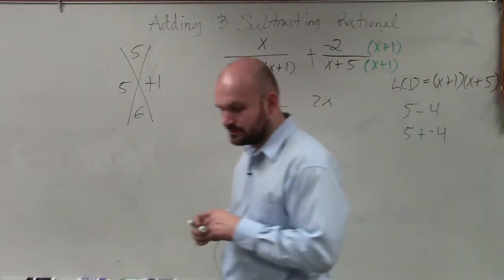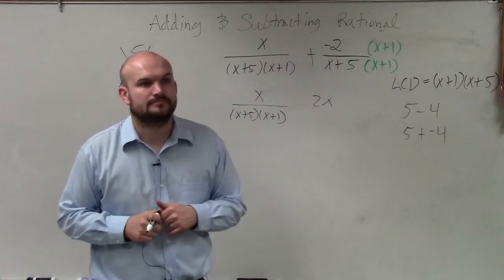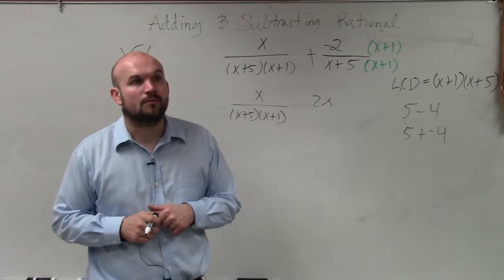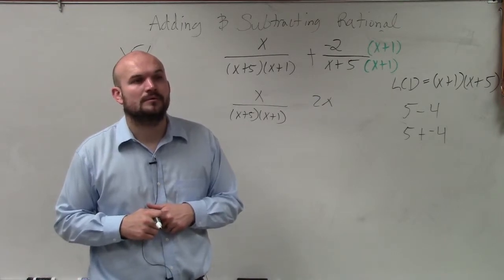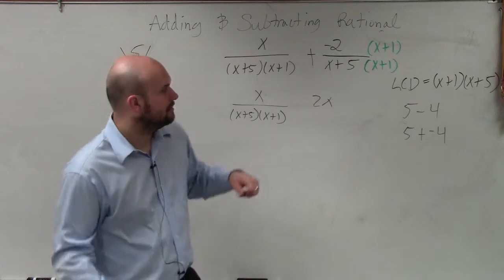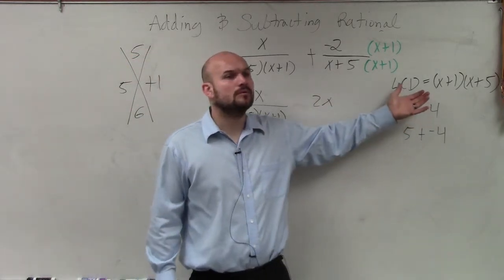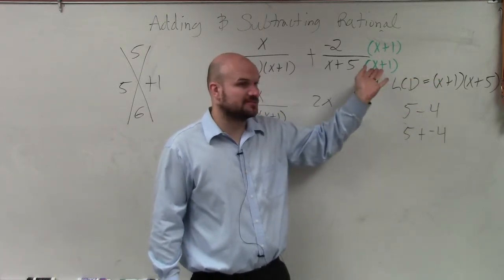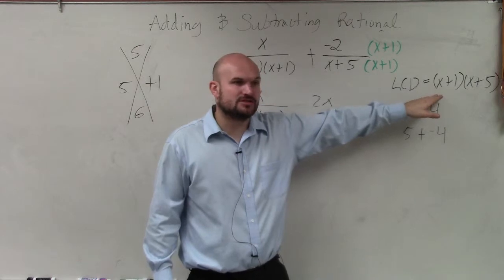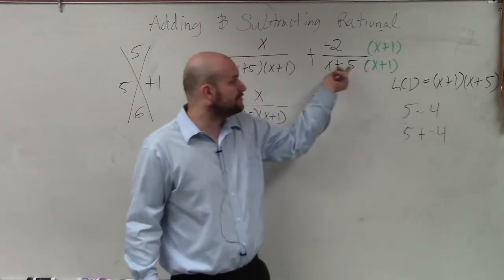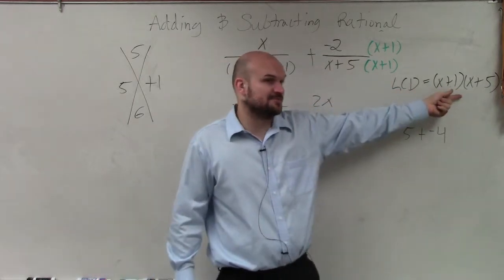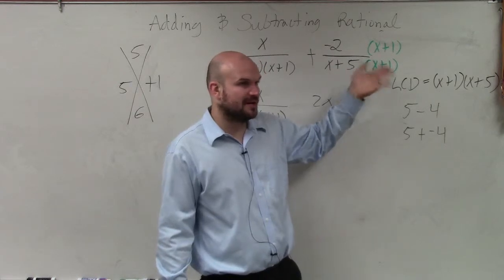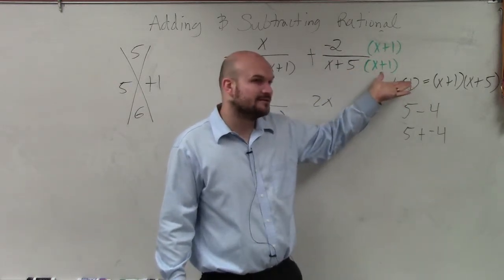Student: How do you understand how you multiply by x+1? Why or how? It makes a difference. Why. The reason why we multiply by x+1 is because we're trying to get the LCD, which is (x+1)(x+5). So the only thing I need to do to (x+5) to make it look like (x+1)(x+5) is to multiply it by (x+1). Whatever I do in the denominator, I have to do in the numerator. So that's why I multiply it.